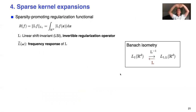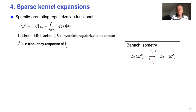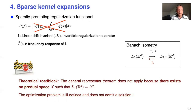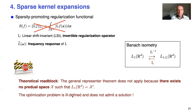Now we want sparse kernel expansions. The natural idea from compressed sensing is to replace the L2 norm by an L1 norm — same story with a linear shift-invariant invertible regularization operator. But there's a huge theoretical roadblock: we cannot apply our theorem because there does not exist a pre-dual space X such that L1 is the dual of something. This means the optimization problem is ill-posed and does not admit a solution — it converges to a limit that lies outside the space.